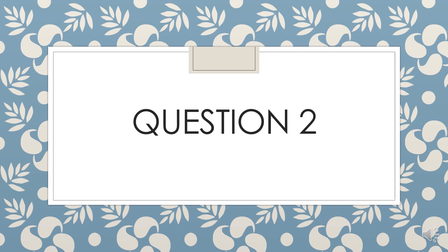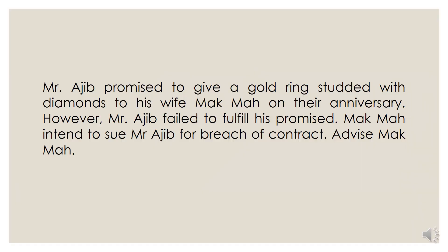We have question number two. Mr. Ajib promised to give a gold ring with diamond — basically, Mr. Ajib promised his wife to give a diamond ring on their anniversary. But Mr. Ajib later failed to fulfill his promise. Now his wife Mak Mah intends to sue him for breach of contract. You have to advise Mak Mah. From the fact: husband promised wife to give something, husband did not fulfill the promise, and the wife intends to sue. You have to tell the wife whether she can sue or not.